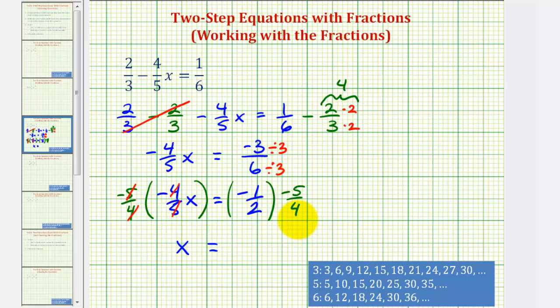And on the right side, nothing simplifies. So we have negative one times negative five, that's five. And the denominator we have two times four, or eight. So our solution is x equals five-eighths.